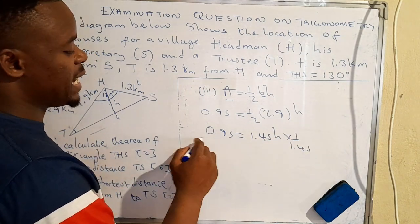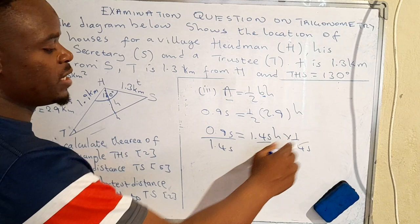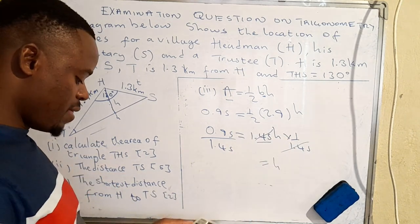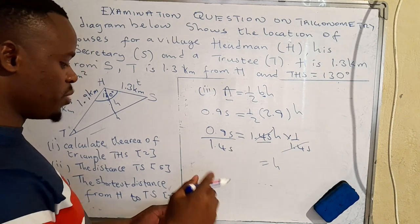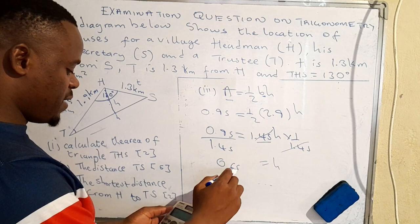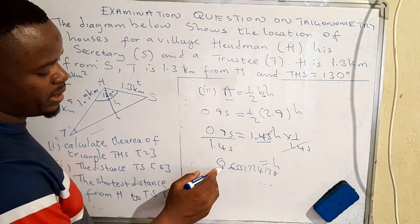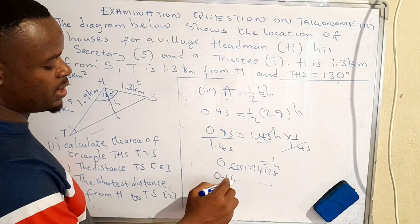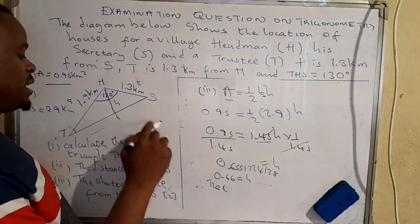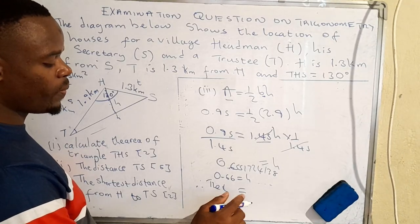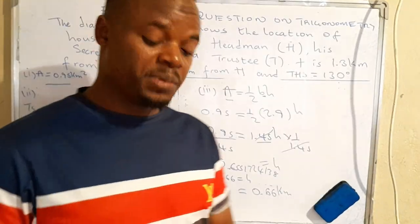Our goal is to isolate h, so we divide both sides by the coefficient of h. That gives us h equals 0.95 divided by 1.45, which equals 0.6551724138. Rounded to two decimal places, that is 0.66 kilometers. Therefore, the shortest distance from H to TS is equal to 0.66 kilometers.